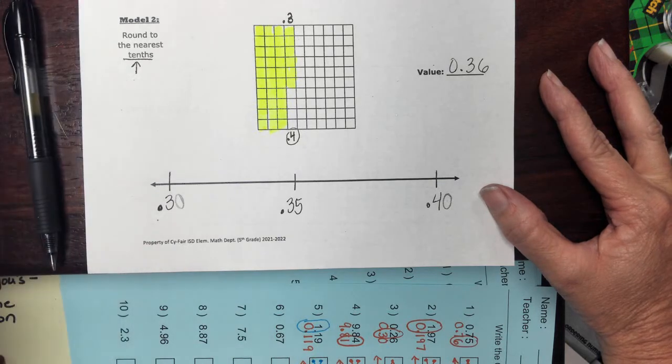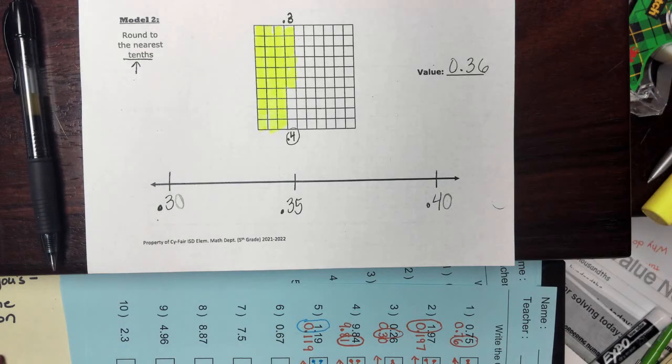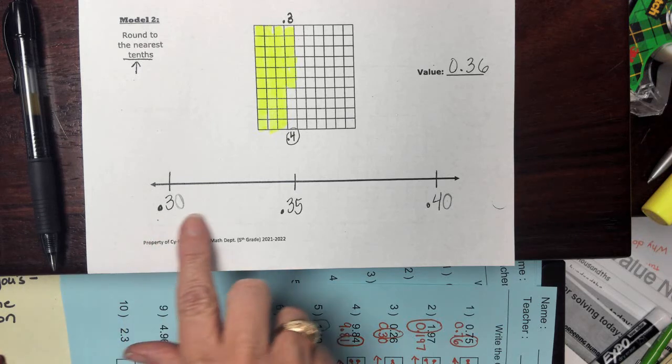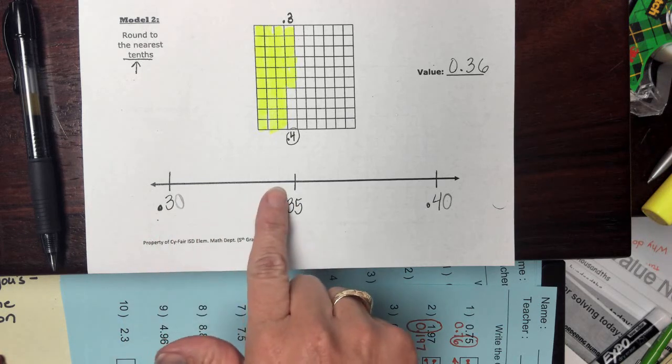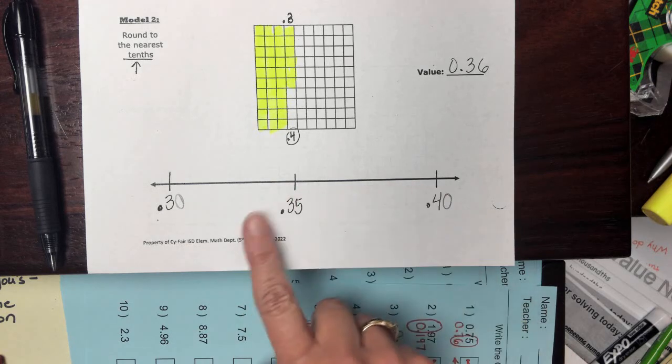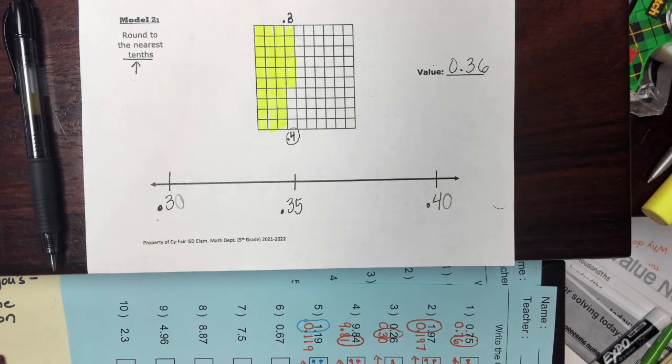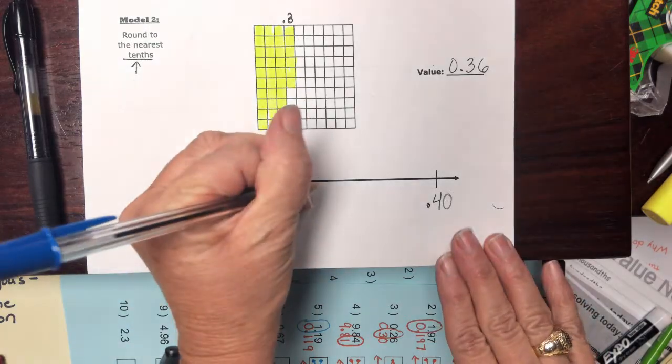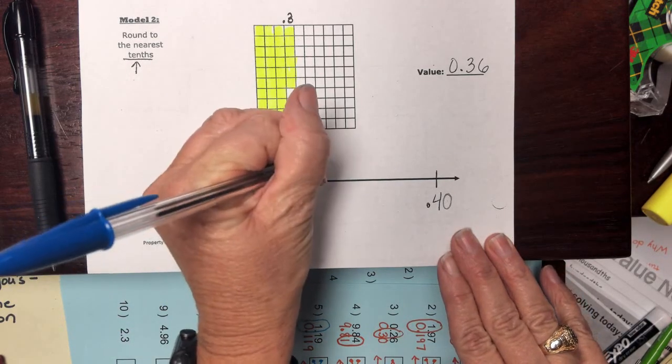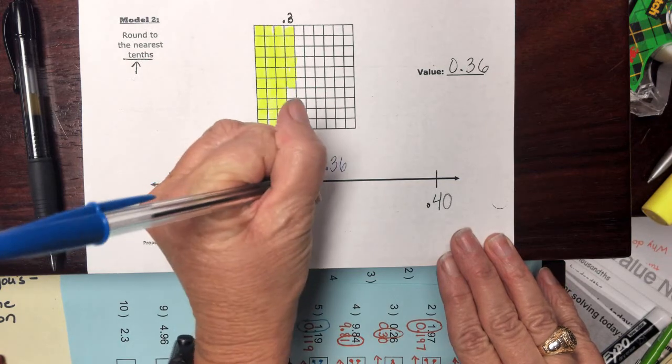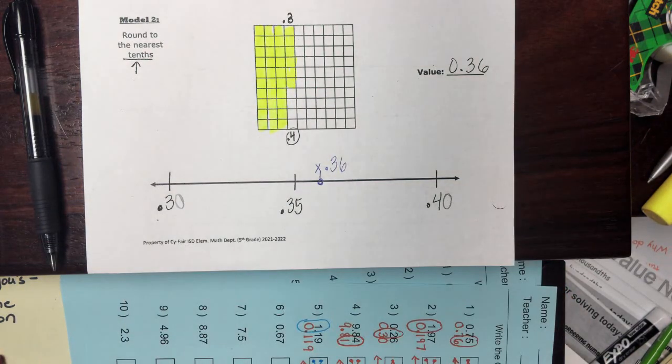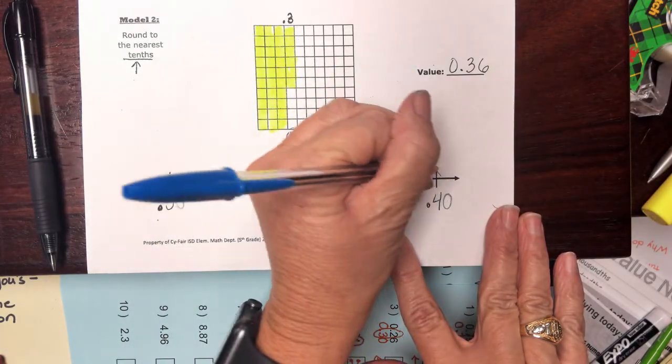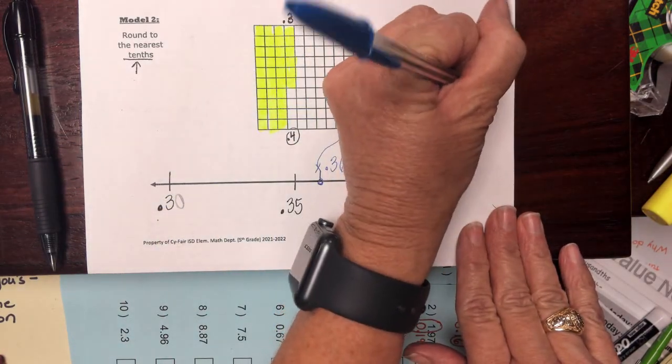And if I want to mark where thirty-six hundredths is, if I'm thinking about just going in order, is it going to be before the midpoint, Nathan? Or is it going to be after my midpoint? Where would thirty-six hundredths fall? Before the midpoint or after, Nathan? After. It's going to be about right here. And right now, I think some of you can see very clearly, are we closer to three tenths or are we closer to four tenths? Four tenths. We're closer to four tenths. So we're going to round this value to four tenths. What questions can I answer for you?